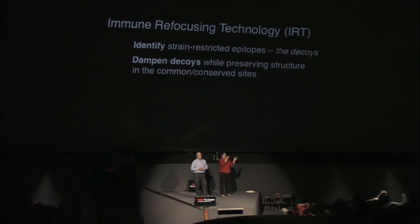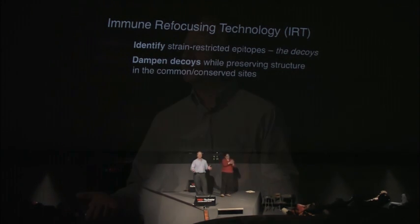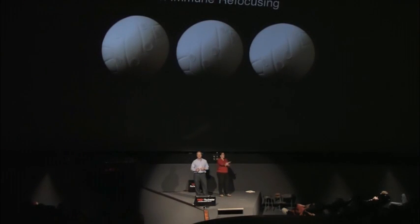Then we try to dampen these decoys while preserving the overall structure—we have turned down the heat on these decoys. Now, hopefully, we can make vaccine candidates that recognize the common sites that are more protective. In essence, what we've done is erased the A's, B's, and C's on these stickers, and now the three volleyballs look pretty much the same, because there are lots of sites that are common.